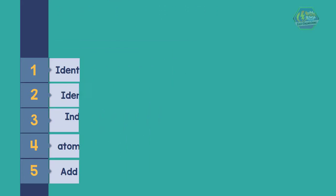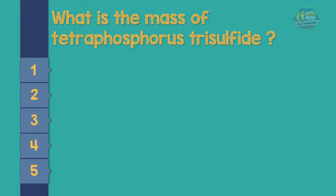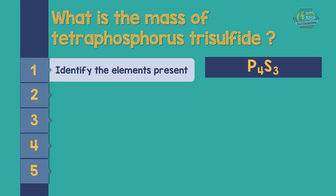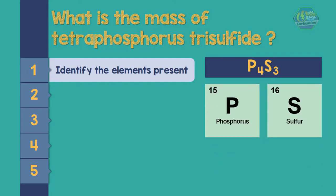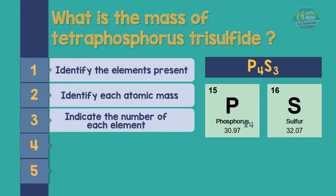For example, what is the mass of tetraphosphorus trisulfide? Write the compound first — that is 4 phosphorus and 3 sulfur (P₄S₃). Following the steps in solving for the molecular mass, there are only two different kinds of elements: phosphorus and sulfur. The atomic mass of phosphorus is 30.97 g/mol, and for sulfur, 32.07 g/mol.